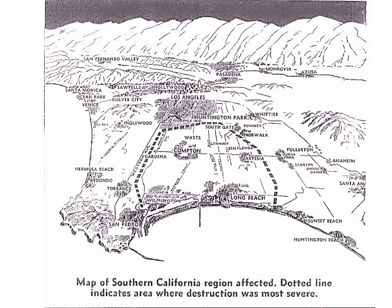This drawing indicates the general area affected by the March 10 earthquake. Originating several miles offshore from Seal Beach, the quake rumbled through Long Beach, Compton, southeastern Los Angeles, Linwood, Bellflower, Artesia, and sections of Norwalk and Southgate. Striking a few minutes before 6 p.m., the trembler lasted about 10 seconds and is usually described as a 6.3 earthquake.